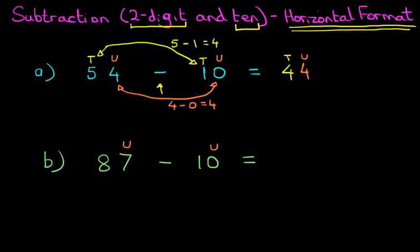We've got units and units. So we've got 7 and 0. So 7 minus 0 is 7. That hasn't changed.